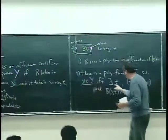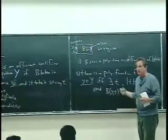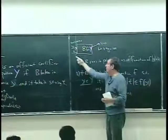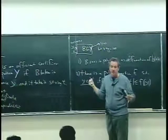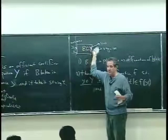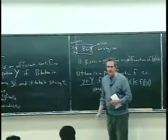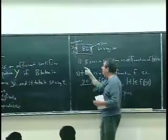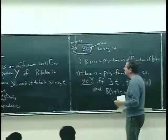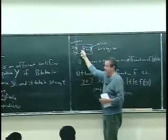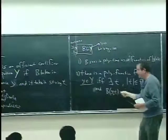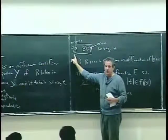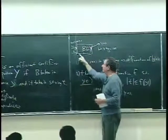But if all the algorithm B is doing is looking at the word 'yes' and saying yes, you could definitely fool it — give it the number 15 which is not prime, give it the word 'yes', and B would say yes and it wouldn't be doing the right thing. In fact there is a polynomial-sized hint that you can always give in the case of primality so that a polynomial time certifier does the right thing.